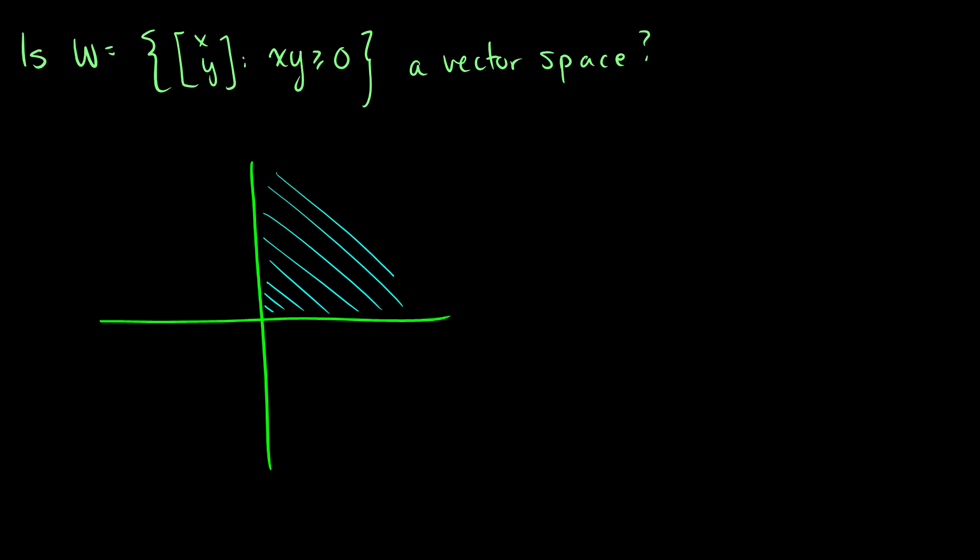because if we have a positive times a positive, it equals a positive. But we're also allowing this area down here. So a negative times a negative is equal to positive. So this looks good, right?